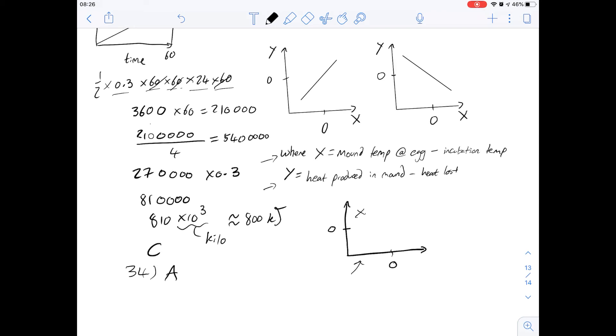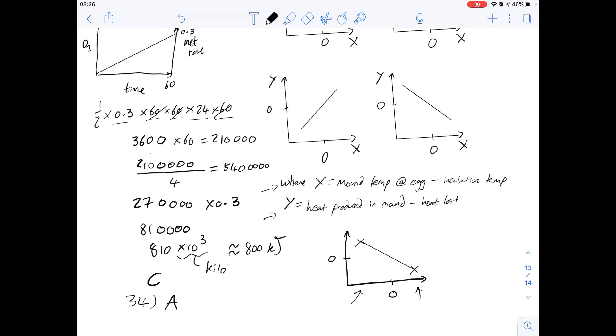And then it says the reverse is true above the incubating temperature, so on this side of the graph, the heat loss is going to be greater than the heat produced, and so we end up with a point down here. And so then we can draw a line to see a trend, and we can see that it corresponds here to answer D. So the answer for this one is going to be D.